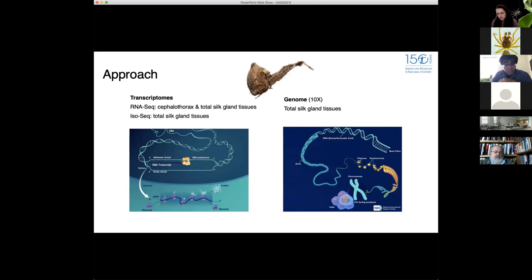So we set out to catalog the spidroins for the cribellate orb weaver Uloborus diversus, and we used different genomic approaches. I'm not going to get into all the details of the extensive sequencing because I want to get to the juicy part, but we did two different transcriptomes: an IsoSeq that was made from total silk gland tissue, and for this we dissected out the collection of silk glands and tried to avoid any other tissue as much as possible. We also did RNA-seq transcriptomes from both cephalothorax as well as the total silk gland tissues. And we assembled a 10X genome from total silk gland tissue. We used different BLAST searches and annotation pipelines to annotate each assembly, which I hope you'll see published in a month or so.